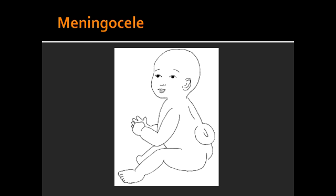What is Meningocele? Meningocele is when the meninges herniate through the spinal canal defect. In this, the spinal cord is not herniated — it's only the meninges that herniate through the spinal canal defect.